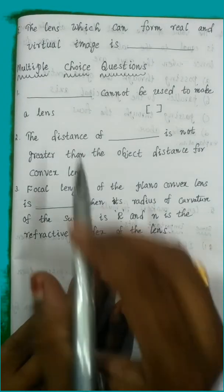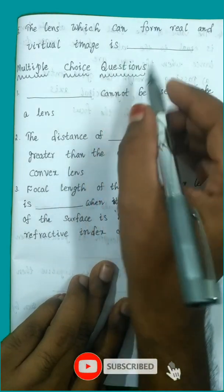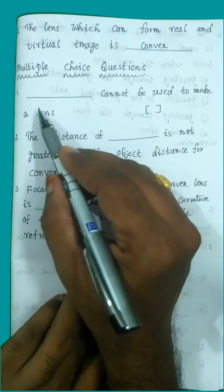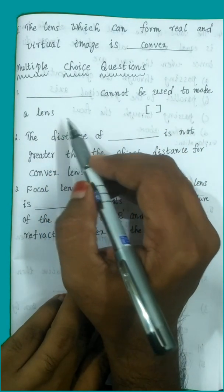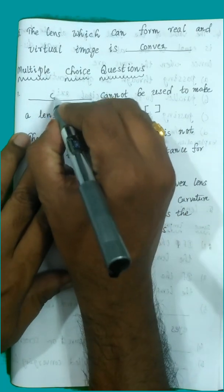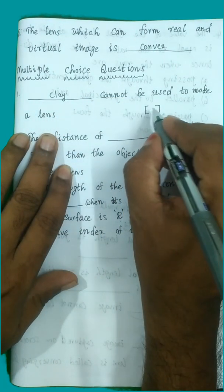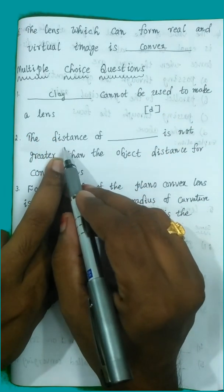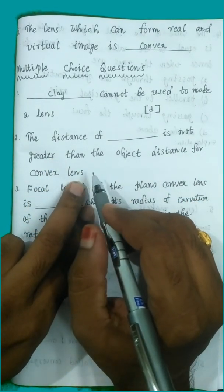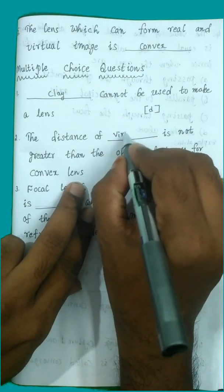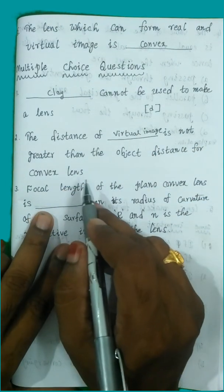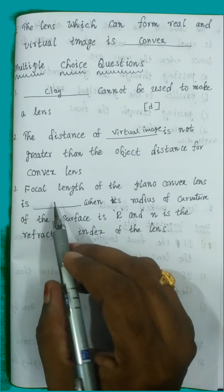A convex lens can form both real and virtual images. Regarding which material cannot be used to make a lens: water, glass, and plastic are transparent, but clay is not a transparent medium, so clay is the answer — option D is correct. For a convex lens, the distance of a virtual image is not greater than the object distance.